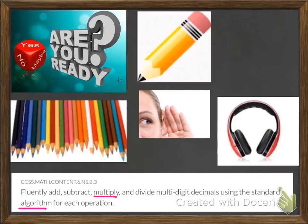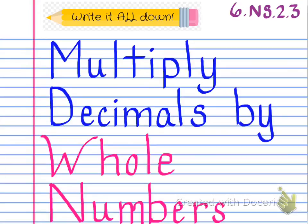As you can see, you can see the standard here. It says fluently add, subtract, multiply, and divide multi-digit decimals using the standard algorithm for each operation. So that's what we're going to be working on today. You want to make sure to write that standard down just like you would normally on the title page. The title page should say: multiply decimals by whole numbers, 6.NS.2.3. You want to have this as the heading in your composition notebook for your video.